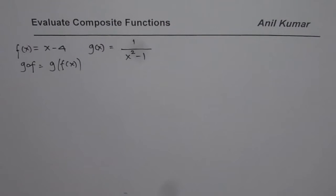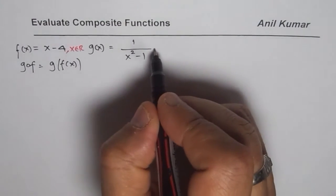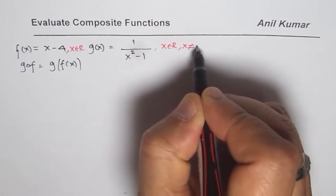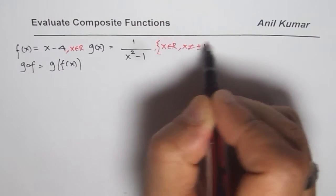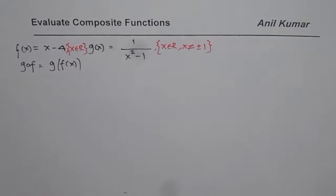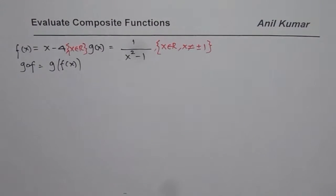As far as domain and range is concerned, for f of x the domain is all real numbers — there are no restrictions. However, for g of x we do have restrictions: x belongs to real numbers but x is not equal to plus or minus 1. That is the domain for g of x. As for the range of g, this function is not equal to 0, but takes all other values in real numbers.